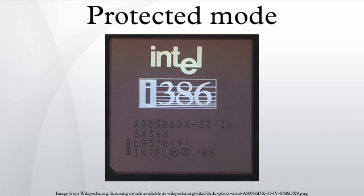On the 286, the segment address inside the descriptor table entry has a length of 24 bits, so every byte of the physical memory can be defined as a bound of the segment. The limit value inside the descriptor table entry has a length of 16 bits, so segment length can be between 1 byte and 2^16 bytes. The calculated linear address equals the physical memory address.